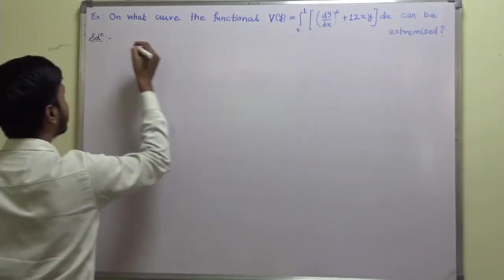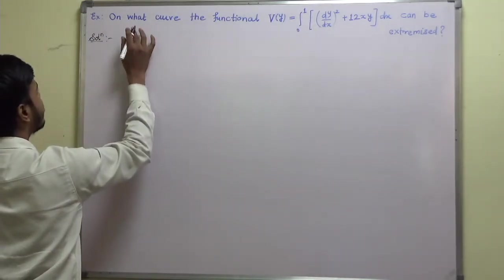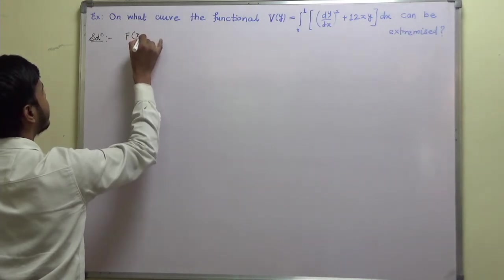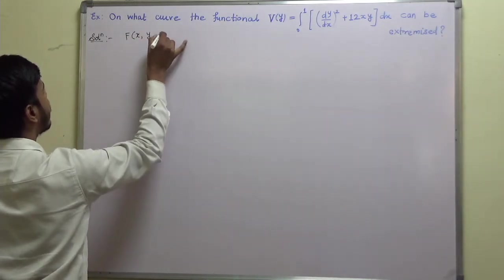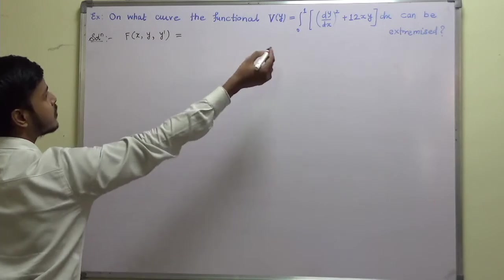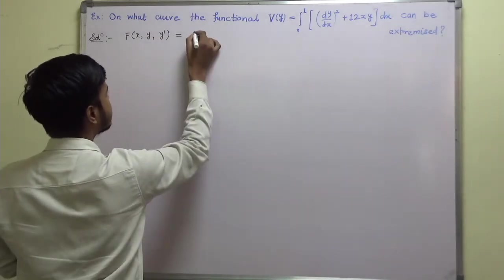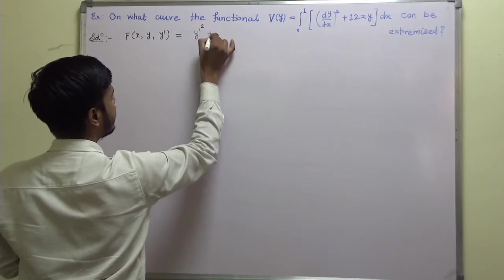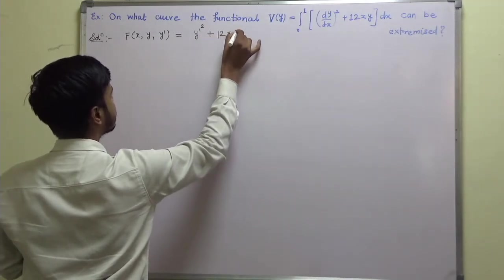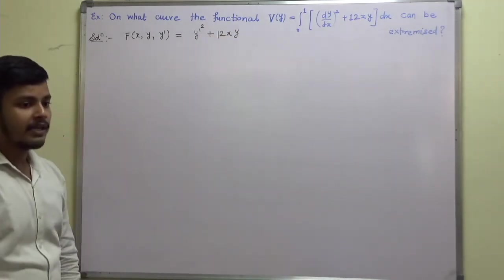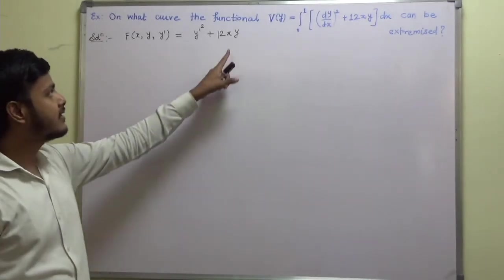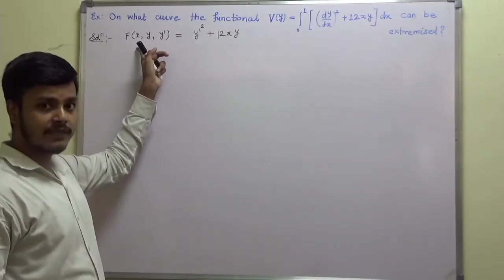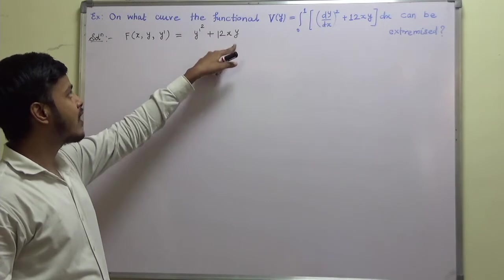So what we have, we have f of x, y, y dash is equal to, what is it, dy by dx means y dash. So this is y dash square plus 12xy. Now as you can see here, this function f involves x, y and y dash.